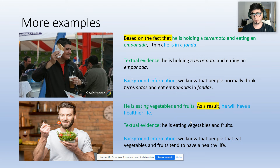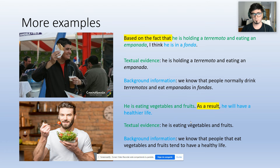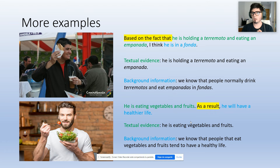On the other picture, we can see a man — he is eating vegetables and fruits. As a result, he will have a healthier life. My textual evidence is that he is eating vegetables and fruits; we can see it in the picture, it's a fact. My background information is that we know people who eat vegetables and fruits tend to have a healthy life. My inference: he is eating vegetables and fruits; as a result, he will have a healthier life. I decided to use the phrase 'as a result' to give a result in this case.